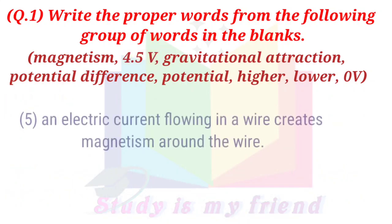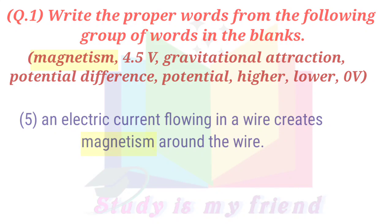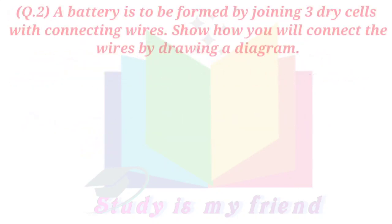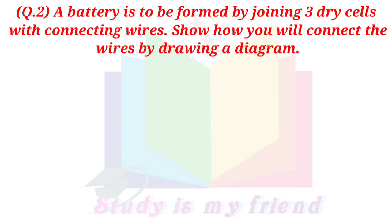E. An electric current flowing in a wire creates magnetism around the wire. Question 2. A battery is to be formed by joining three dry cells with connecting wires. Show how you will connect the wires by drawing a diagram.